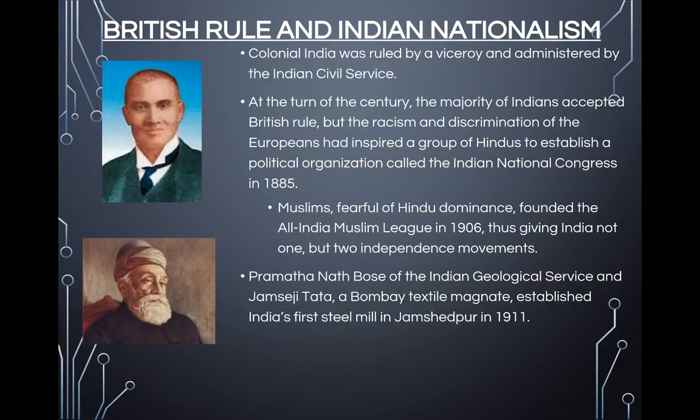In 1918 and 1919, several incidents contributed to increased tensions between the British and the Indian people. These included a too-vague promise of self-government and an incident in which a British general ordered his troops to fire into a crowd of 10,000 unarmed demonstrators. Indians lost their patience with gradual British reforms after this massacre, and Gandhi and other Congress leaders were arrested in 1920.